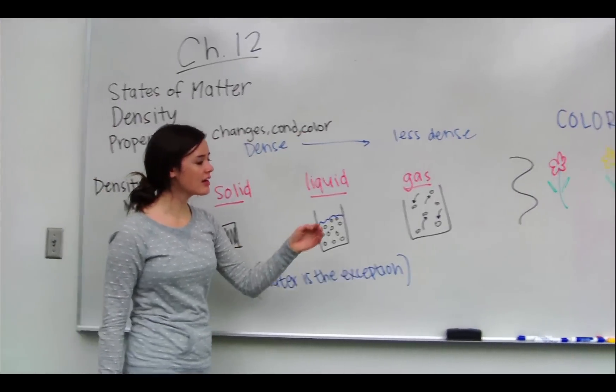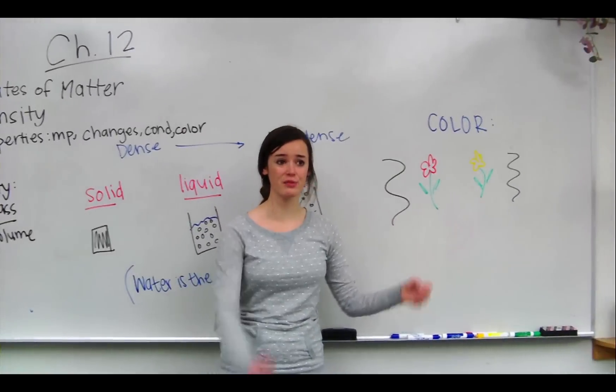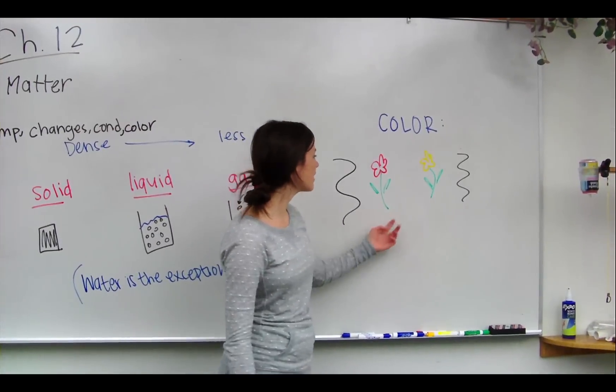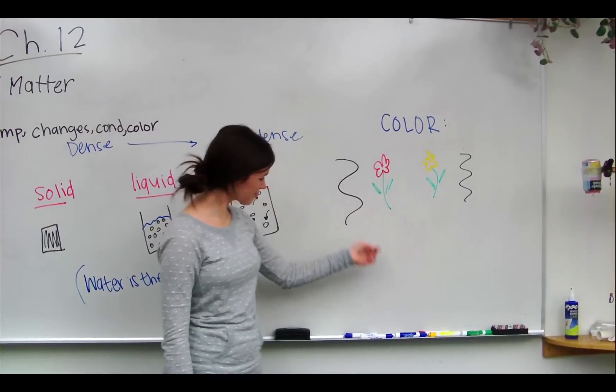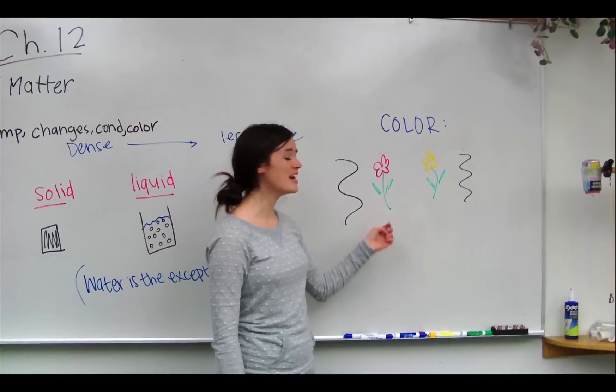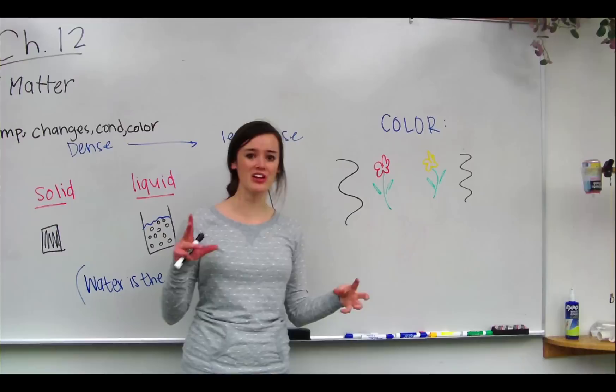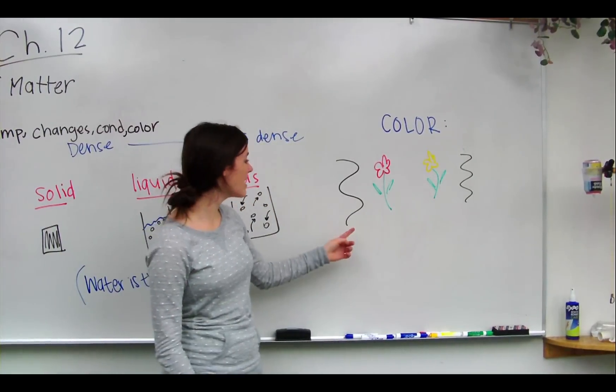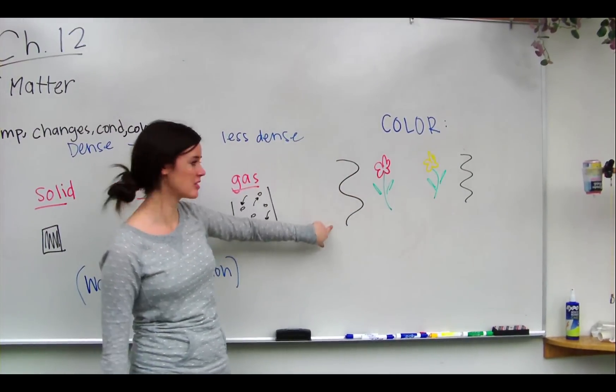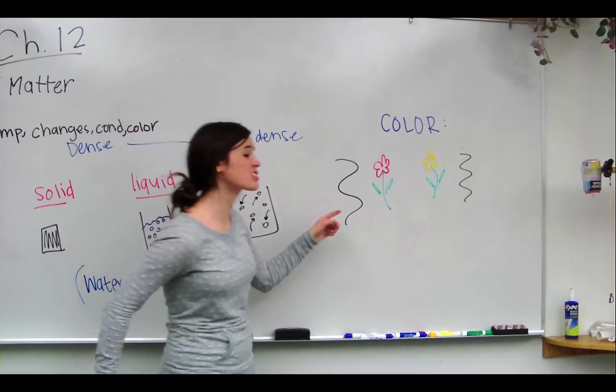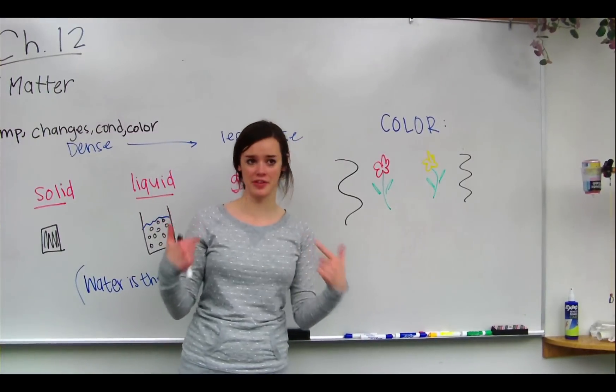And color. Color is a reflection of wavelengths. If we have a yellow flower and a red flower, the red flower absorbs every single color except for red. The red, which has a longer wavelength as you remember from last chapter, is reflected out. That's the color we see.